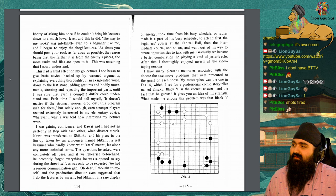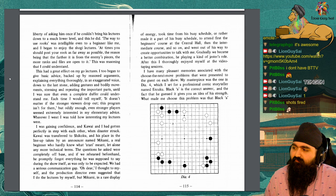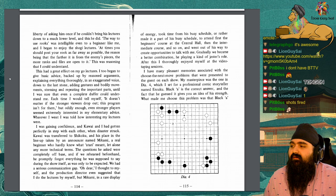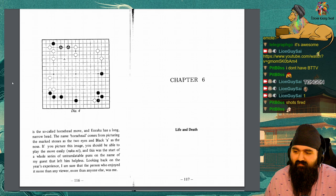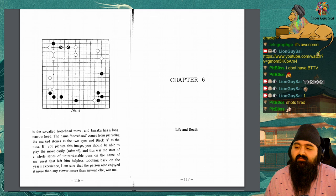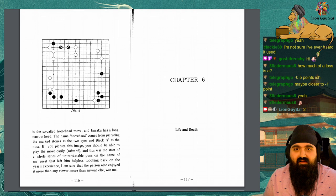I have many pleasant memories associated with the choose-the-next-move problems that were presented to the guest on each show. My masterpiece was the one in Diagram 4, which I sent for a professional comic storyteller named Ennaku. Black A is the correct answer, and the fact that he guessed it gives you an idea of his strength. What made me choose this problem was that Black A is a so-called horse head move, and Ennaku has a long, narrow head. The name horse head comes from picturing the marked stones as the two eyes and Black A as the nose. If you picture this image, you should be able to play the move easily, raku-ni. And this was the start of a whole series of untranslatable puns on the name of my guest that left him helpless. Looking back on that year's experience, I am sure that the person who enjoyed it more than any viewer, more than anyone else, was me.